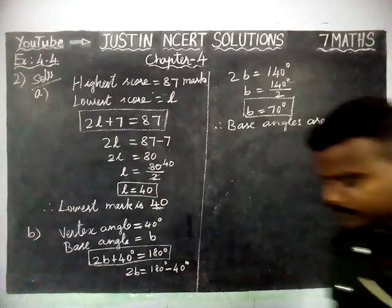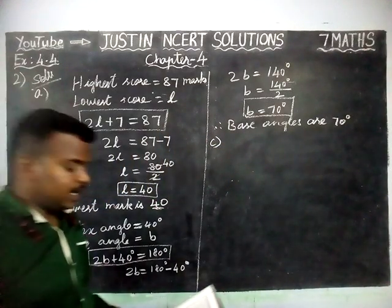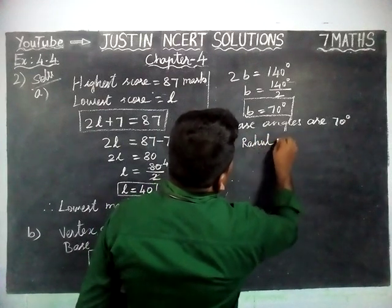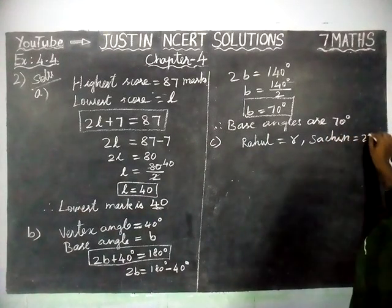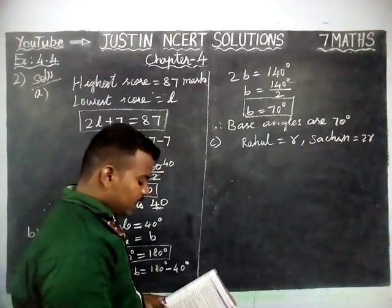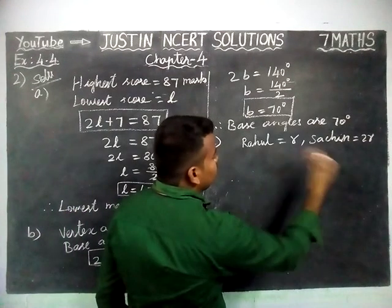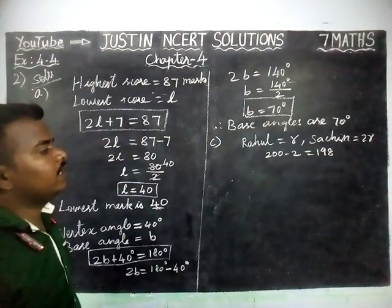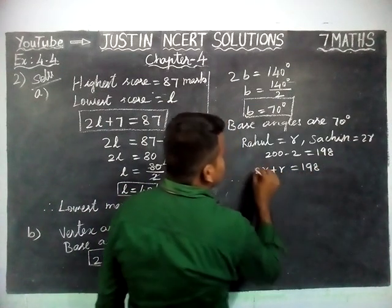Now we are going to solve Part C. Saurabh's score is twice as many as Rahul's. We are going to take runs scored by Rahul as R. So Saurabh's score is 2R. Both of them scored nearest to 200 — their runs fell too short of a double century. Double century is 200, so 2 is needed to get a double century: 200 minus 2 is equal to 198. Now we are going to find each one's score. 2R plus R is equal to 198. This is the required equation.